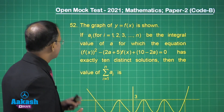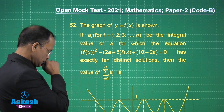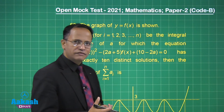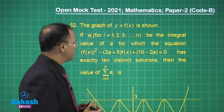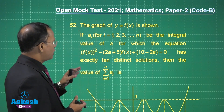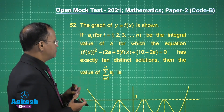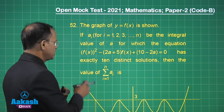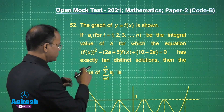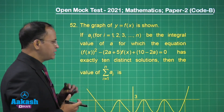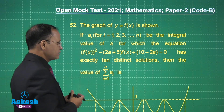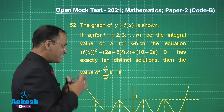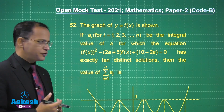Let us talk about question number 52. The graph of y = f(x) is given. If a_i for i = 1, 2, 3 up to n are the integral values of a for which the equation f(x)² minus 2(a+5)·f(x) + 10 - 2a has exactly 10 distinct solutions.